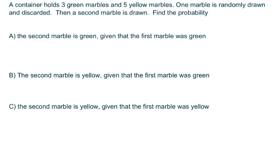Hi everyone, we're going to do conditional probabilities with a container that holds marbles. We have three green and five yellow. One marble is randomly drawn and discarded, then a second marble is drawn. So we have to find the probability.